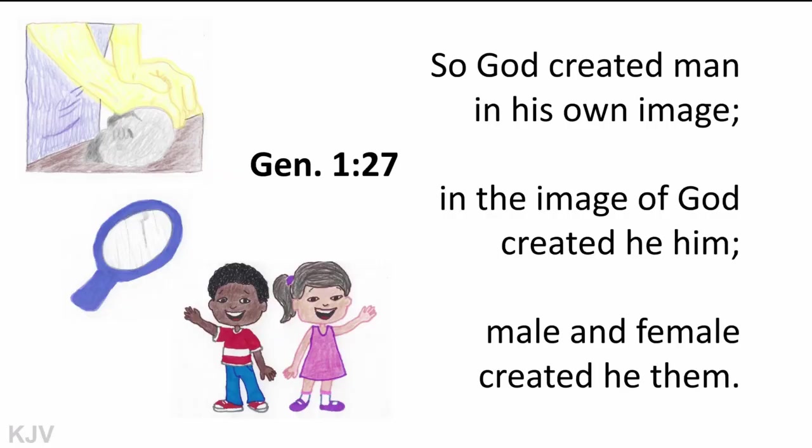Attention. Genesis 1:27. Start. So God created man in his own image. In the image of God created he him. Male and female created he them. Genesis 1:27.